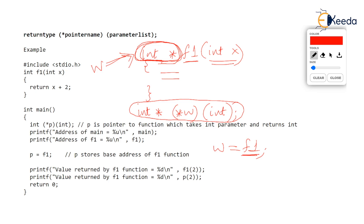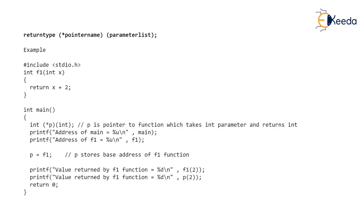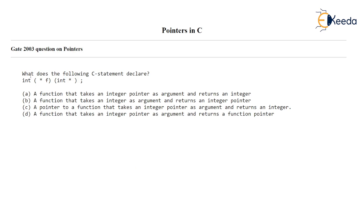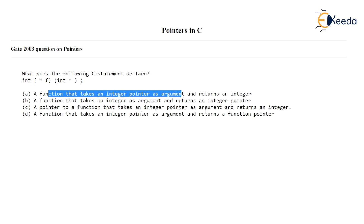Interestingly, in one of the GATE exams — GATE 2003 — there was a question asked. What does the following C statement declare: int (*f)(int*). Let's get through this question. Surely this is a pointer because of the asterisk in the bracket. It is a pointer to a function. The parameter the function takes is int pointer. And what does the function return? An int. So f is a pointer to such a function which takes int pointer as a parameter and which returns an int value. Option A is correct — a function that takes int pointer as argument and returns an integer. It was so simple.